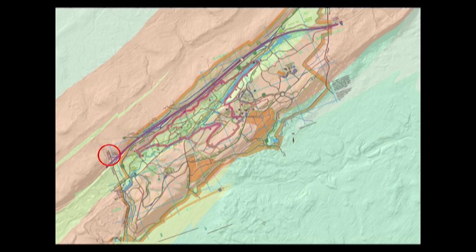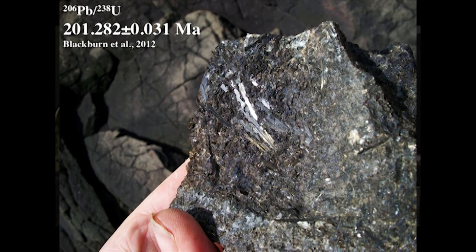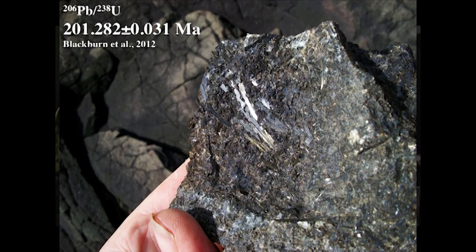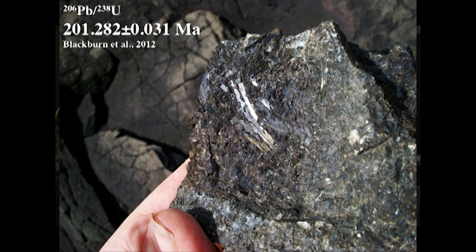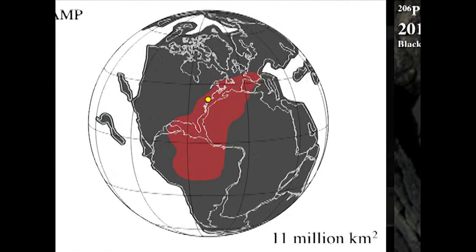Let's look at one more place — Route 78. This produces crystals that allow us to date these rocks precisely. These crystals tell us that the lava flow on Route 78 is 201.282 plus or minus 0.031 million years. How much is 0.031 million in normal years? 31,000 years — that's the precision out of 200 million with which we can date that rock. We know an enormous amount about these rocks and these lavas. We know it caused the mass extinction. We know it caused the dinosaurs to take over the world. And that's all I have to say. Thank you.